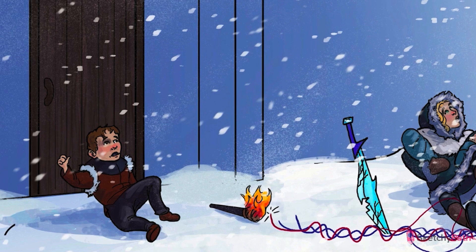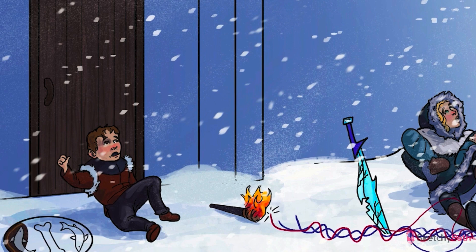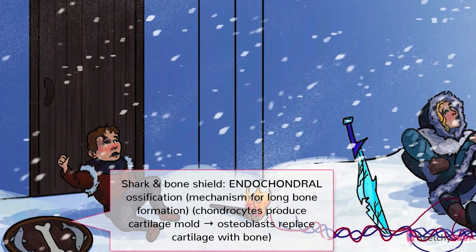The flat bones of the body, such as the bones of the skull and ribs, are formed by intramembranous ossification, in which osteoblasts synthesize new bone on top of bone that's already formed without a cartilage mold. Endochondral ossification, on the other hand, requires cartilage to be there first. The initial cartilage mold is produced by chondrocytes, and osteoblasts then come in and replace the cartilage with bone. This process is symbolized by the shield.